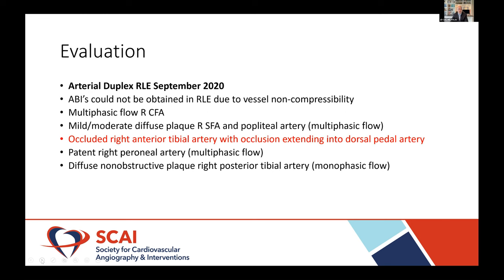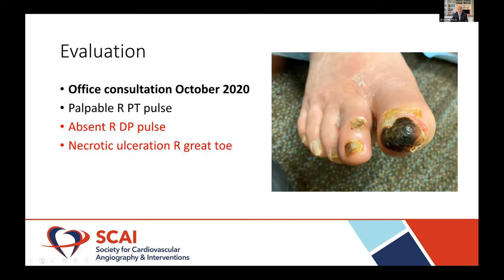Evaluation started with an arterial duplex study in September of 2020. ABIs were not obtained due to vessel non-compressibility. There was multiphasic flow in the right common femoral artery, mild to moderate diffuse plaque in the superficial femoral artery and popliteal artery with multiphasic flow. The anterior tibial artery was occluded, extending into the dorsal pedal artery. The peroneal artery on the right was patent with multiphasic flow, and there was diffuse non-obstructive plaque in the posterior tibial artery with monophasic flow. Based on his presentation and non-invasive study findings, he was referred to our CLI program.